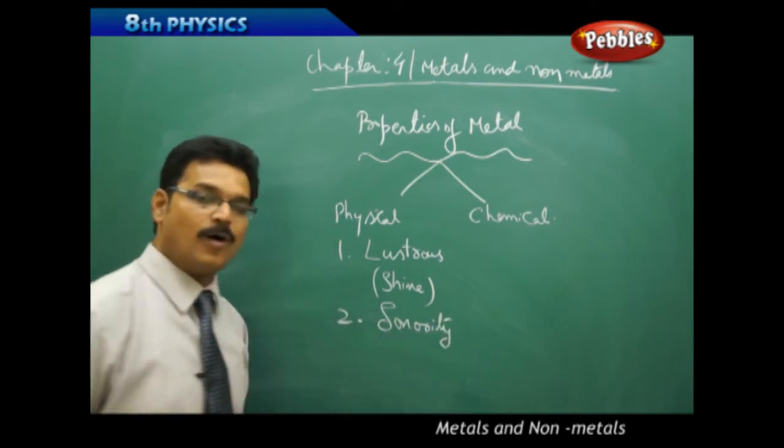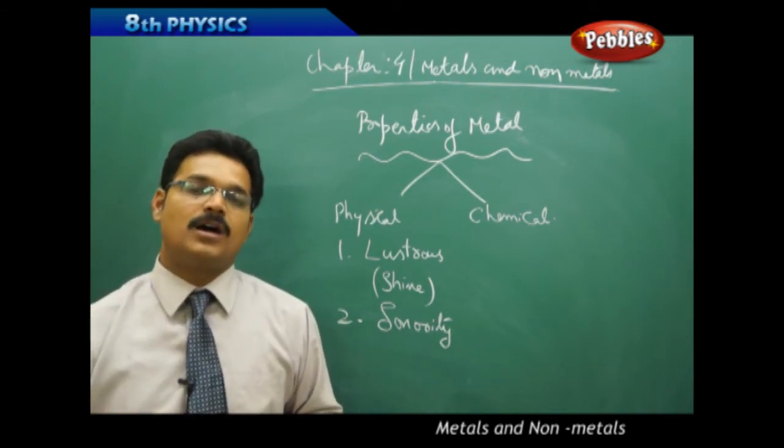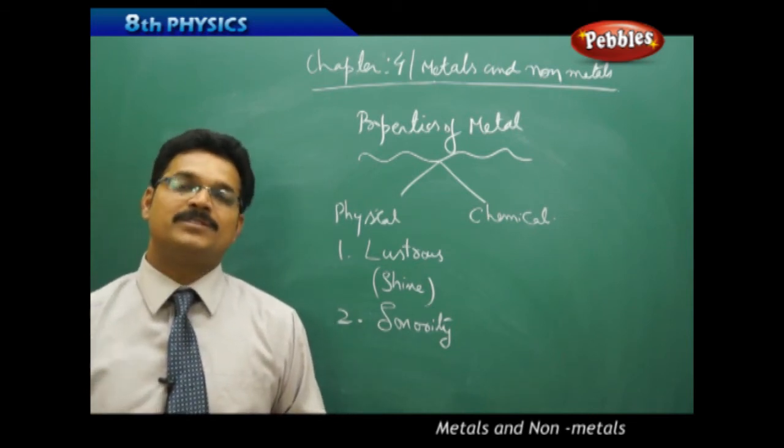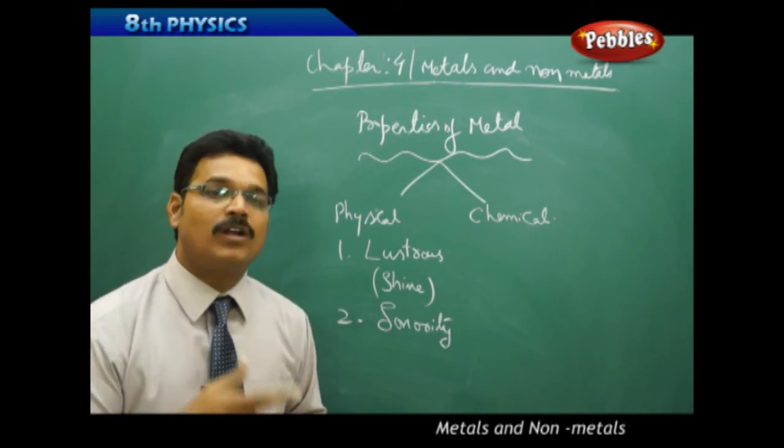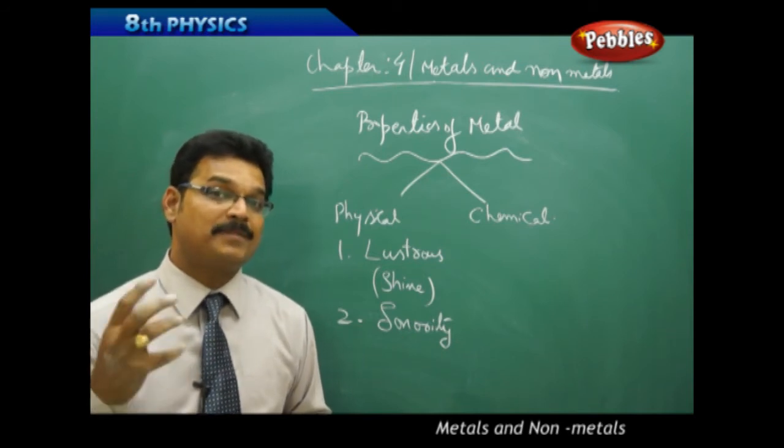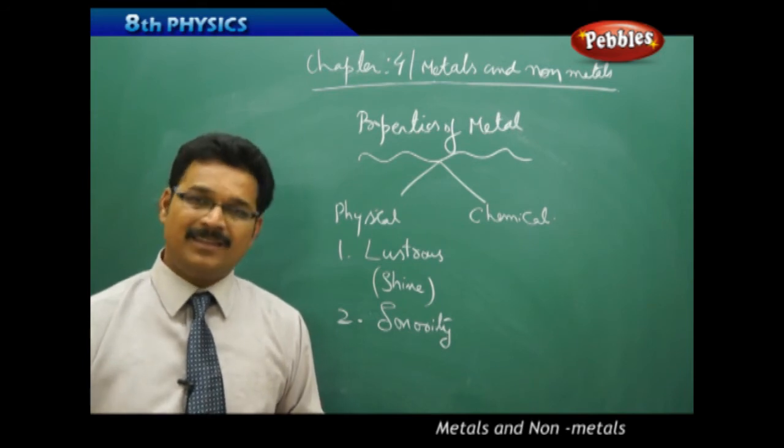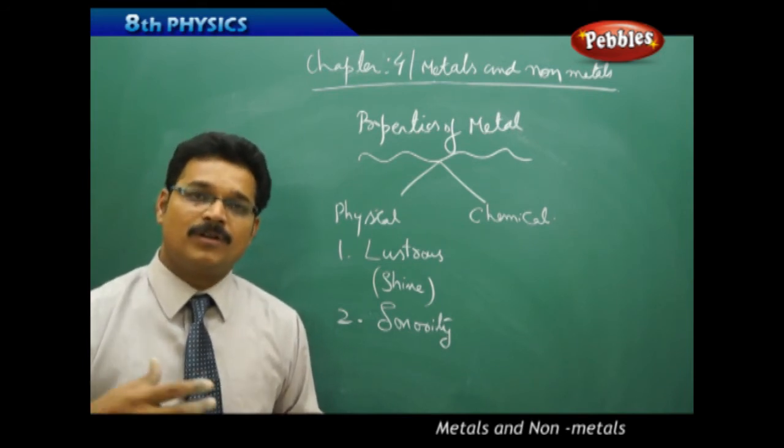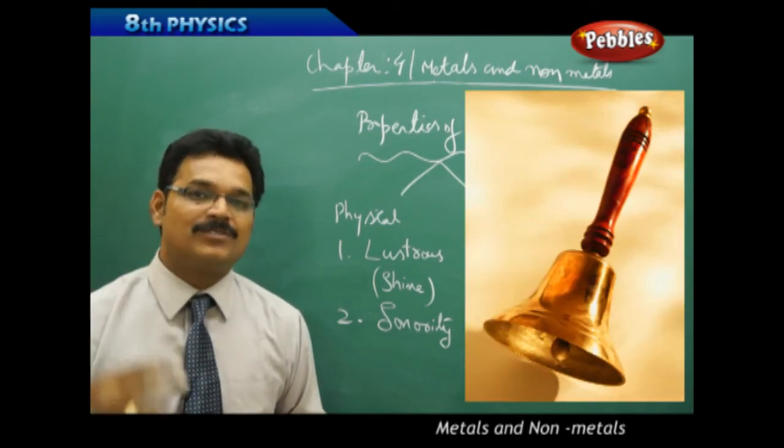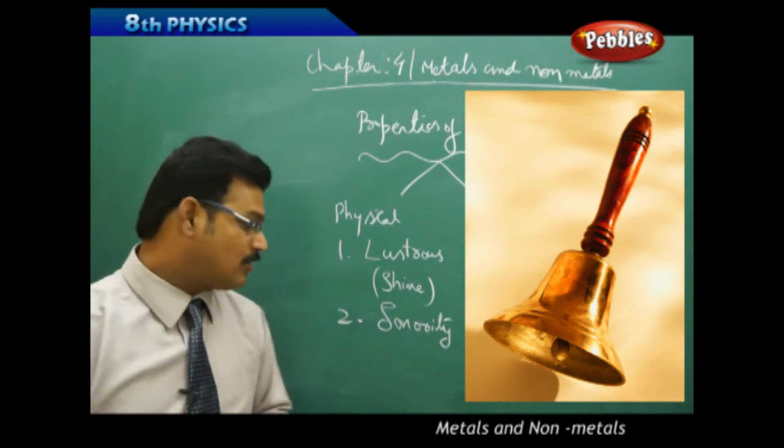The second physical property of metal is sonority. What is sonority? Understand carefully. Suppose I'm carrying 20 to 30 iron nails in my hand and mistakenly they fall down on the ground. Then what happens? You will hear some type of sound, some ringing type of sound. Generally, iron, aluminum, or copper metals, when they fall on the ground, you can hear some sound. That hearing of sound is called sonority.